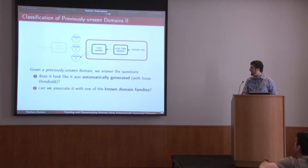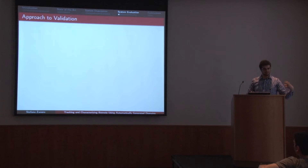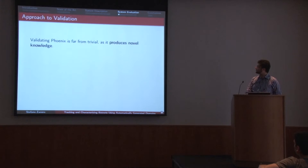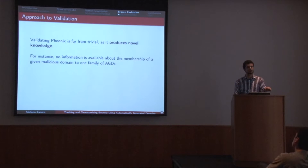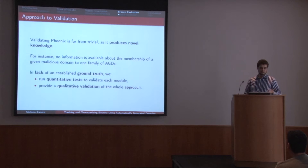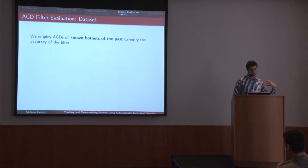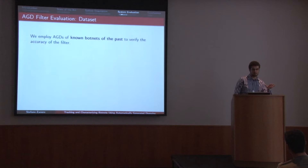Basically, given any previously unseen domain, we can answer two questions: does it look like it's automatically generated? Does it actually belong to one of the clusters we discovered? Evaluation: how do I prove that this theory works? As we said, it's very difficult because we are producing new stuff, so we don't have a background. What we did was build our own background data — we picked up several known botnets of the past and their data, and we ran them through our system to see if we would have been able to automatically identify them. We used the automatically generated names of Conficker, three different versions, of Torpig, of Bamital. The graph with the big clusters connected is the graph from this run.